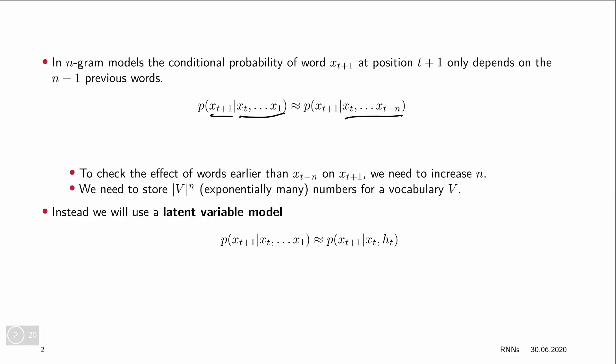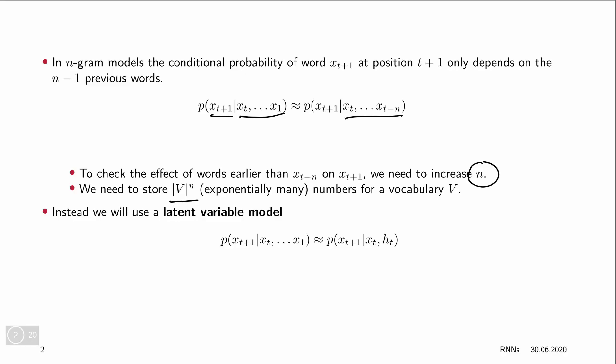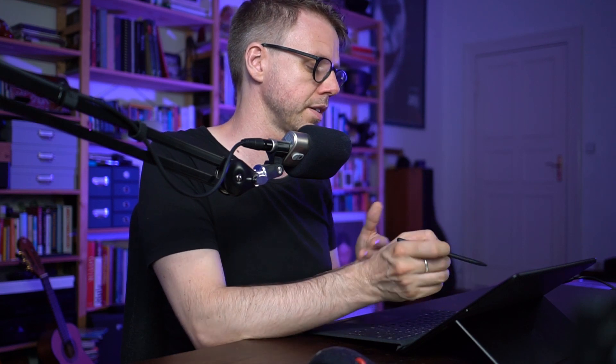A problem is that if we want to capture dependencies of xt+1 on words earlier in the sequence, we need to increase n. The conditional probability table has exponentially many parameters in our vocabulary size. In language modeling, vocabularies can be very large, and this exponential growth in the number of parameters is quickly prohibitive, which doesn't allow us to use a large n.